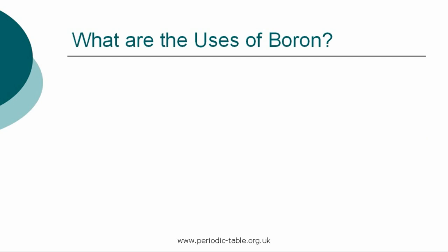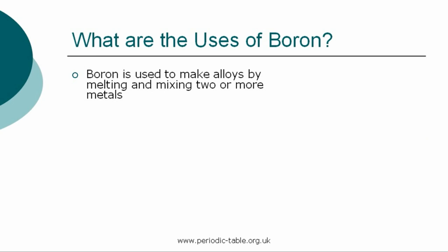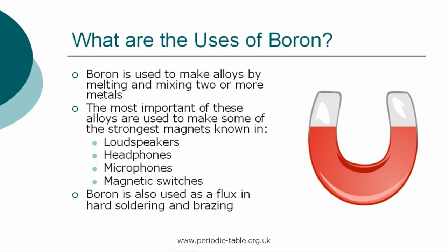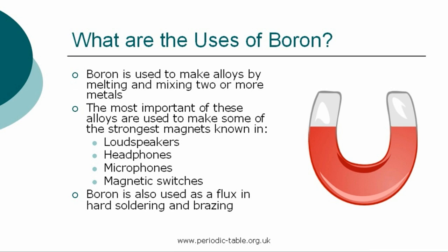Once the properties of an element have been established, we then have the ability to identify how it can be used. Boron is used to make alloys by melting and mixing two or more metals. The most important of these alloys are used to make some of the strongest magnets known, found in loudspeakers, headphones, microphones, and magnetic switches, and also as a flux in hard soldering and brazing.